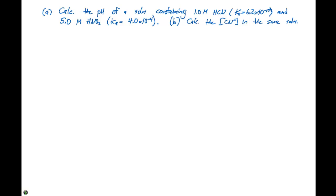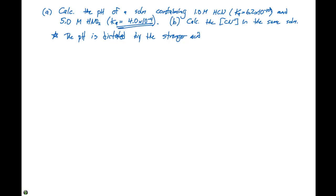If we're mixing two solutions together, the pH is dictated by the stronger acid. In this case, our stronger acid is HNO2 because it has a much larger Ka — six orders of magnitude larger.